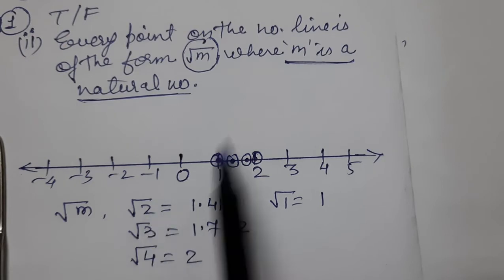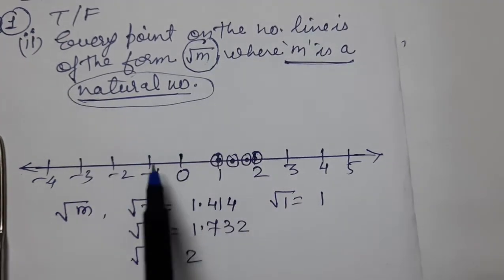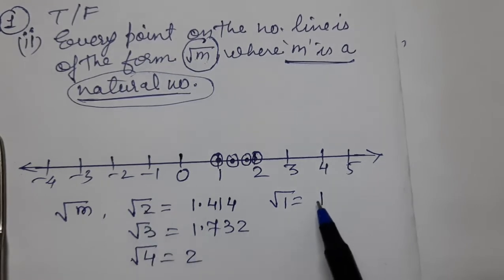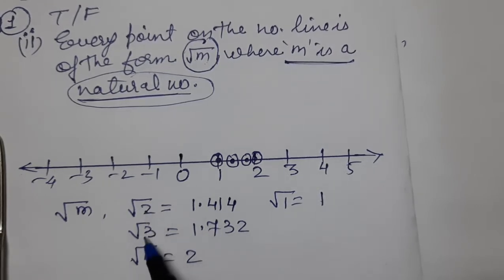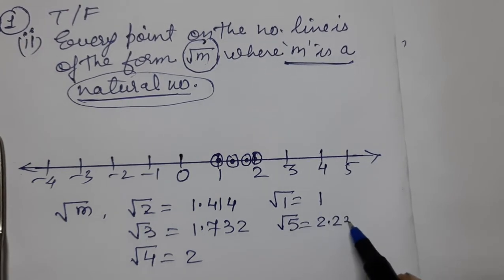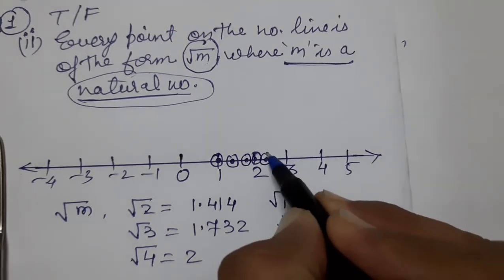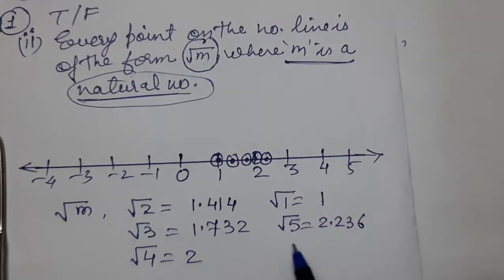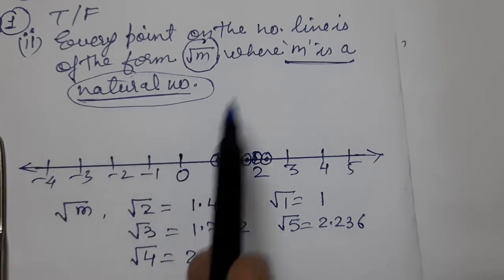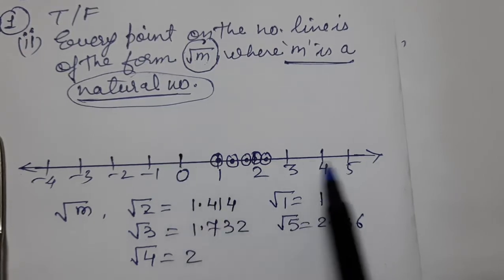M is a natural number, so inside the root we only have natural numbers starting from 1. We took 1, 2, 3, 4, and now let's try 5. √5 is approximately 2.236, so it goes around 2.2 on the number line.